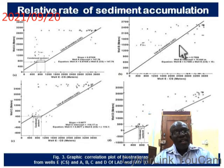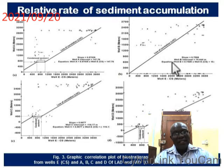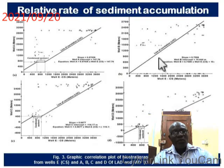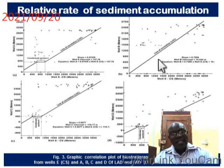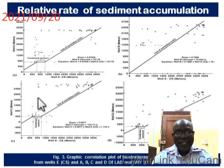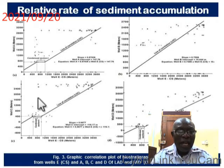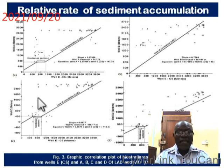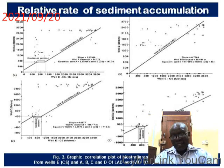When we calculate the slope of this line of correlation, we find that when one meter of sediment is deposited in well E, less than one meter was deposited in wells A, B, C, and D. This means that there is more erosion or accommodation space created in wells A, B, C, and D than in well E — that is the reason why we obtained that result.